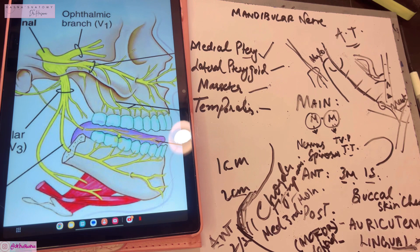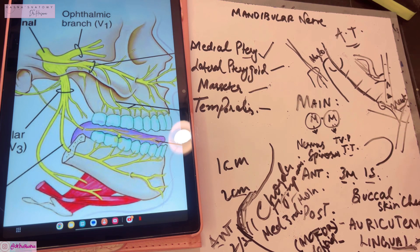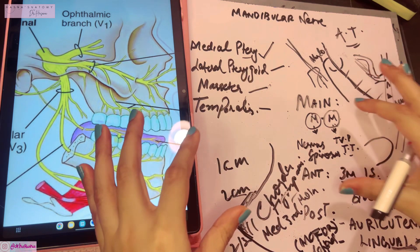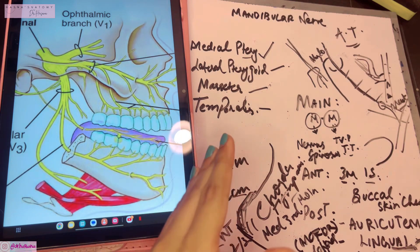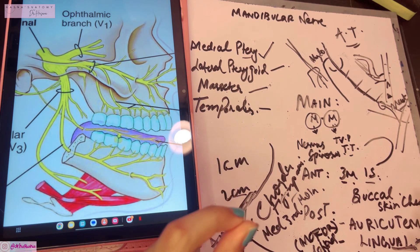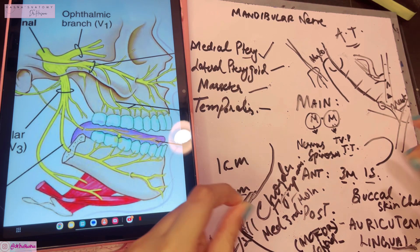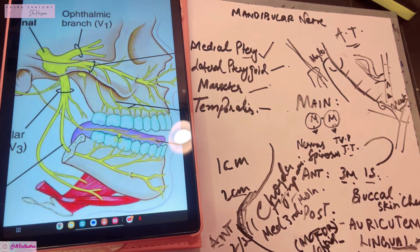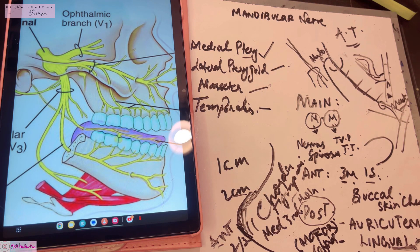That's all you need to know about the mandibular nerve — its important branches, and the branches of those branches. Always remember to organize information in bullet points and focus on the main points of every structure rather than getting lost in confusing details. That was everything about the mandibular nerve — hope you understood the lecture. Thank you so much for watching.